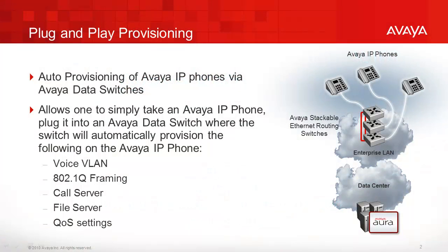Overall, we will cover how to set up an Avaya PoE stackable Ethernet data switch to allow one to simply connect an Avaya IP phone and allow it to automatically connect to the network without having to provision anything on the IP phone itself. The solution will provide plug-and-play provisioning. The Avaya stackable switch can be provisioned to provide all the necessary items to provision the IP phone. This includes what voice VLAN to use, what QoS settings to use, the IP address or addresses for both the call server and file server, plus whether or not to tag the voice VLAN.